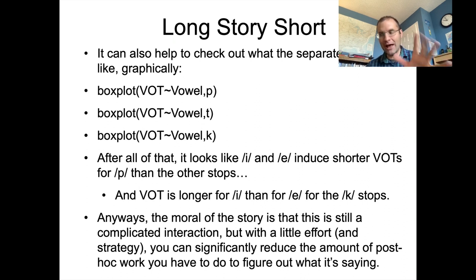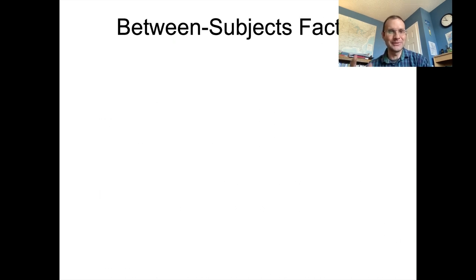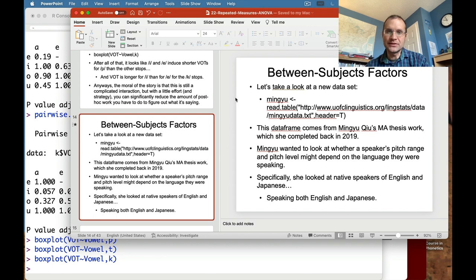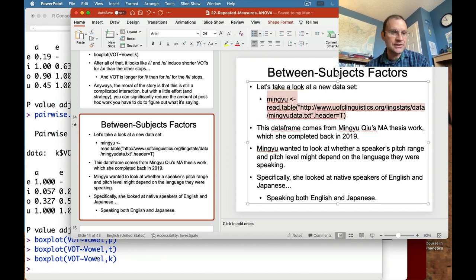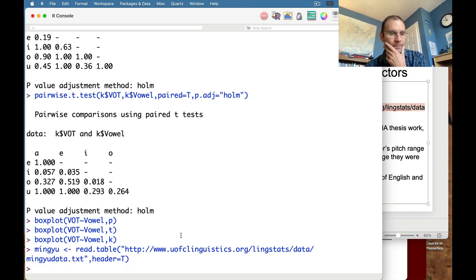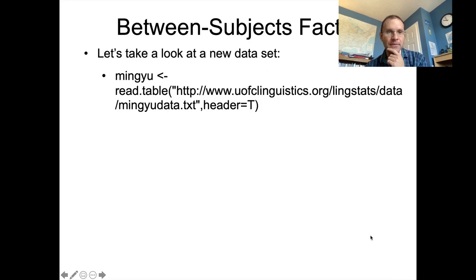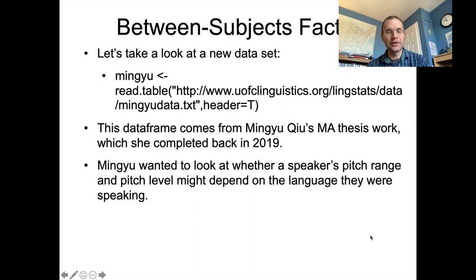That's all for the pragmatic tools for experimental design and these specific tricks for interpreting post hoc results. Now we need to get onto the last topic for repeated measures ANOVA: the concept of between subjects factors. I'm going to load up a new data set from a former MA student, Mingyu Chu, who completed her MA in our program a couple of years ago. She had a really cool study looking at whether a speaker's pitch range and pitch level depend on the language they're speaking.